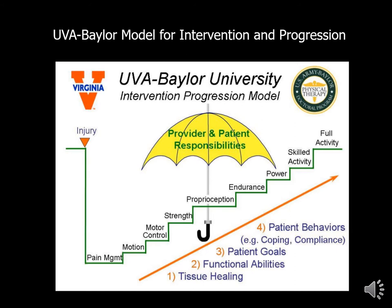We've discussed rehabilitation principles last semester as well as this semester, and it's important to review some key principles again. This is the University of Virginia and Baylor model for intervention and progression. This particular slide shows a stepwise approach to rehabilitation following injury. What's most important is that if you're dealing with pain, that has to be appropriately managed. Once pain is under control, you can begin to work on things like motion, motor control, and strength, and you can certainly do some of that concurrently.